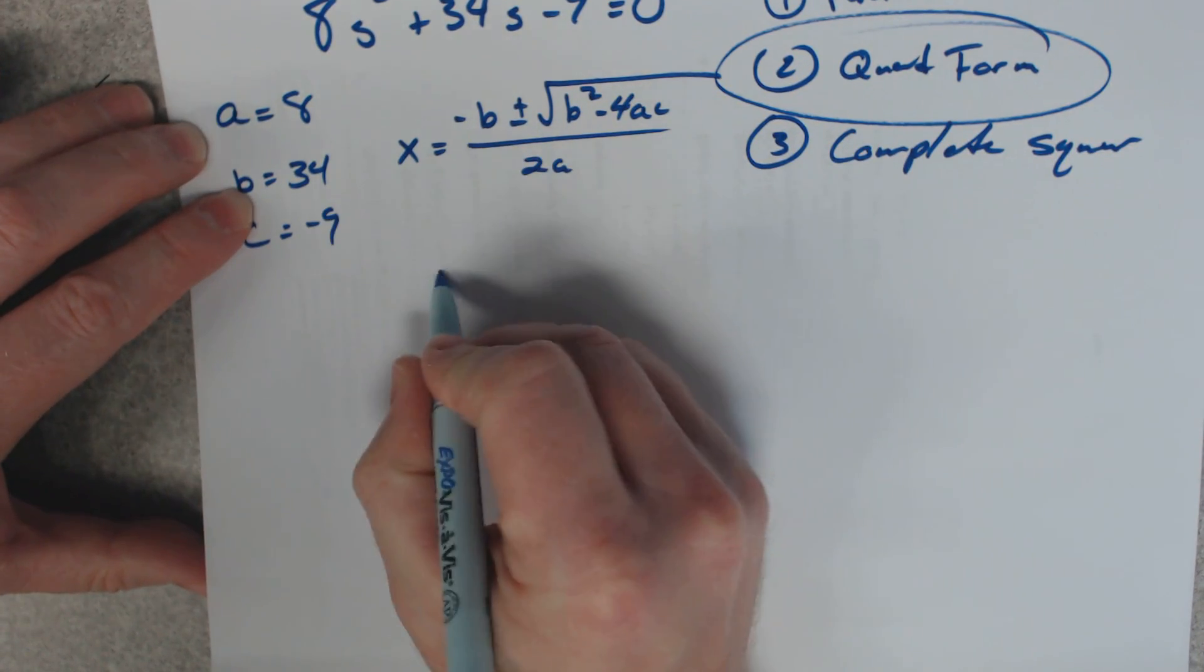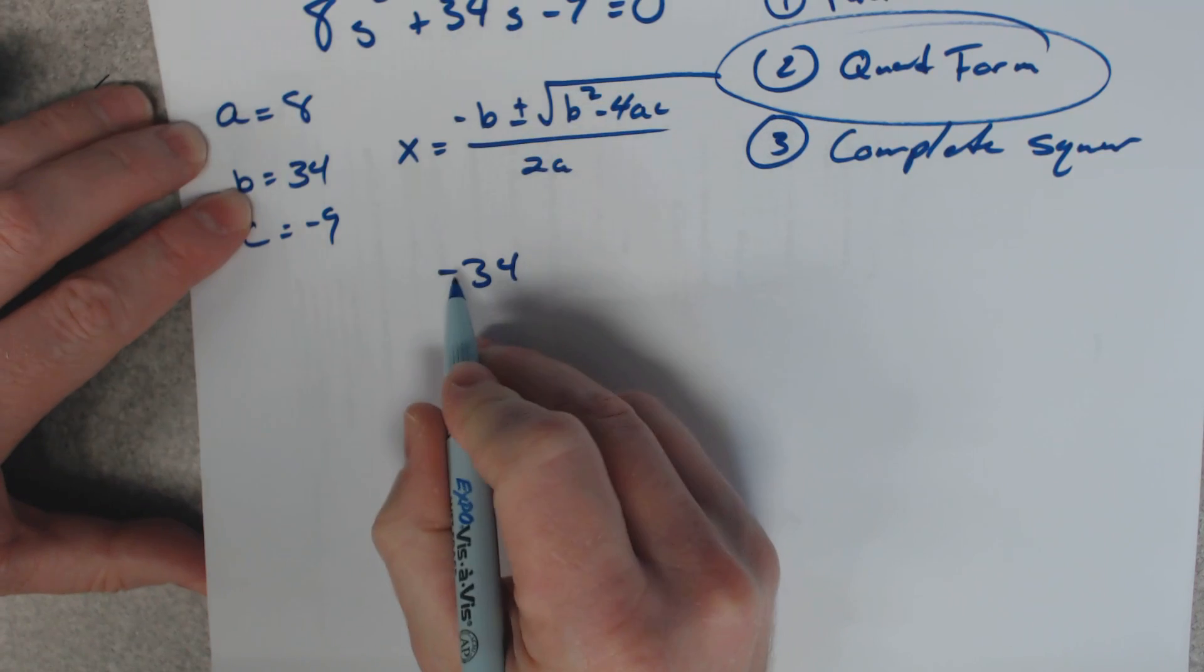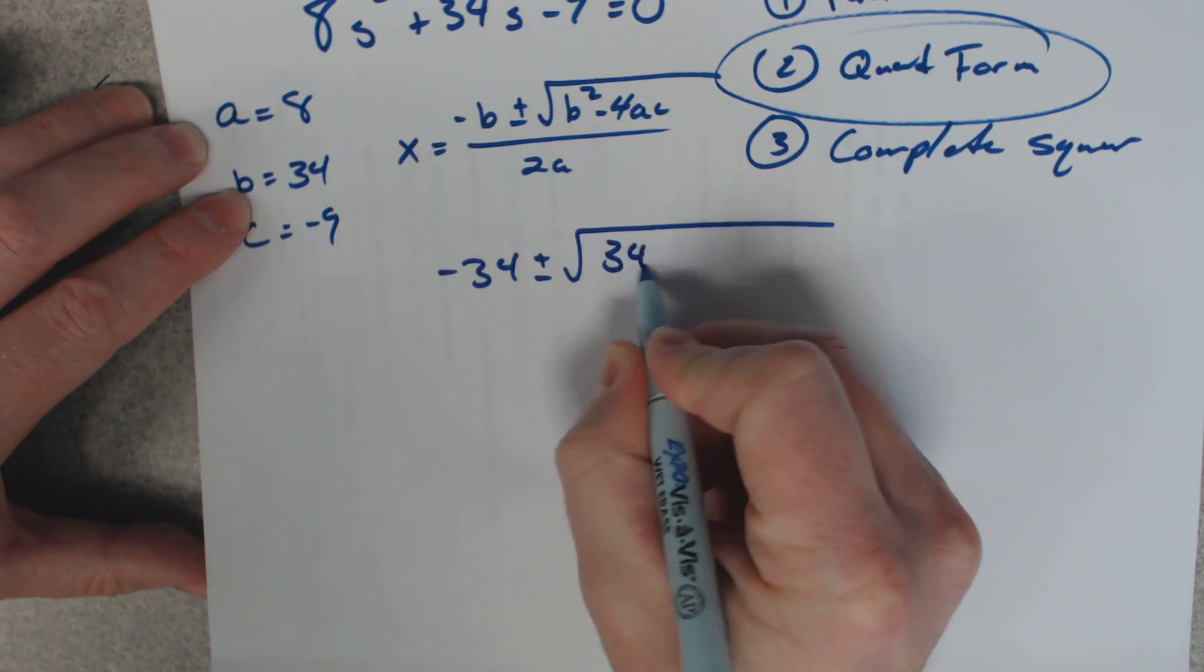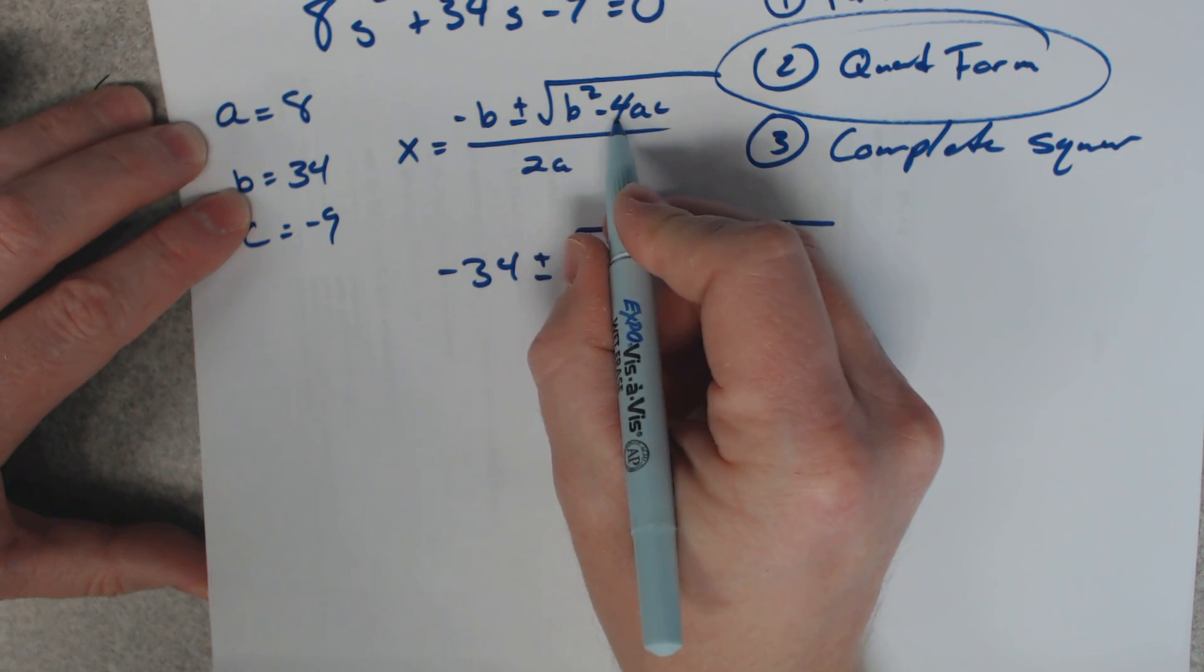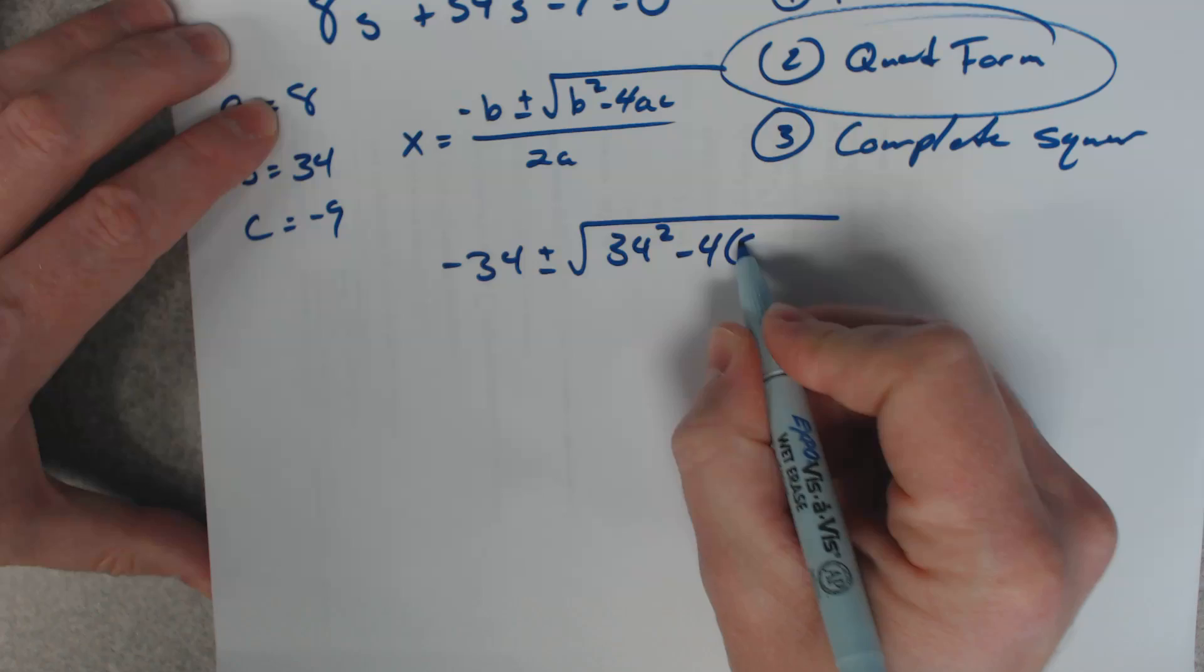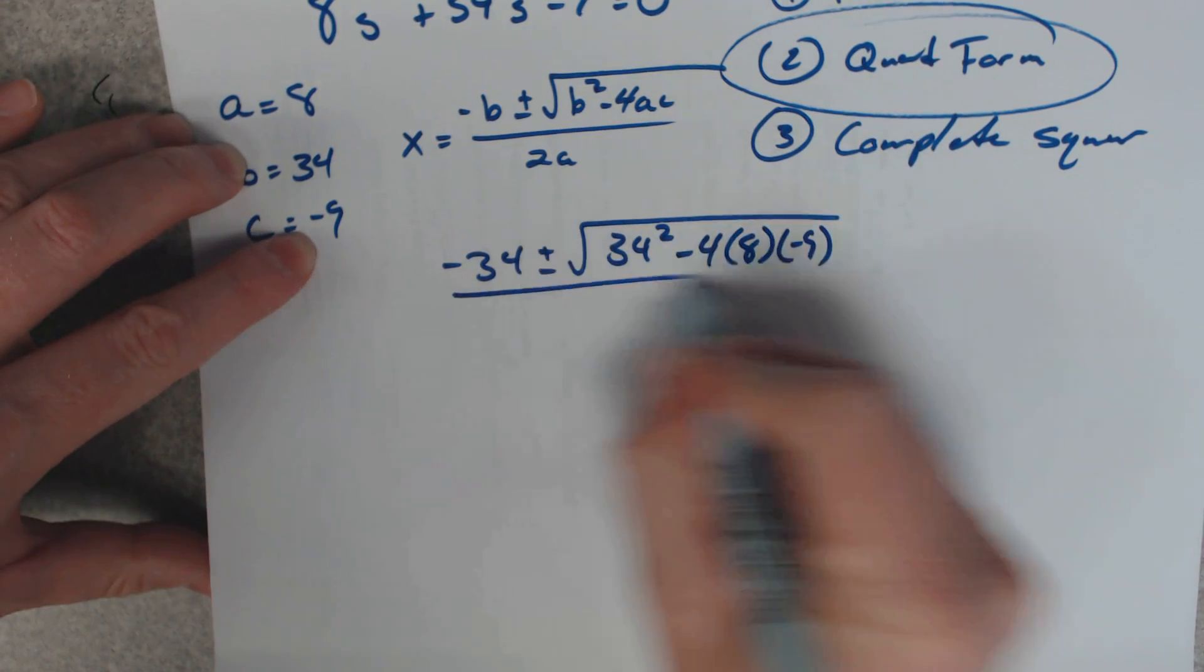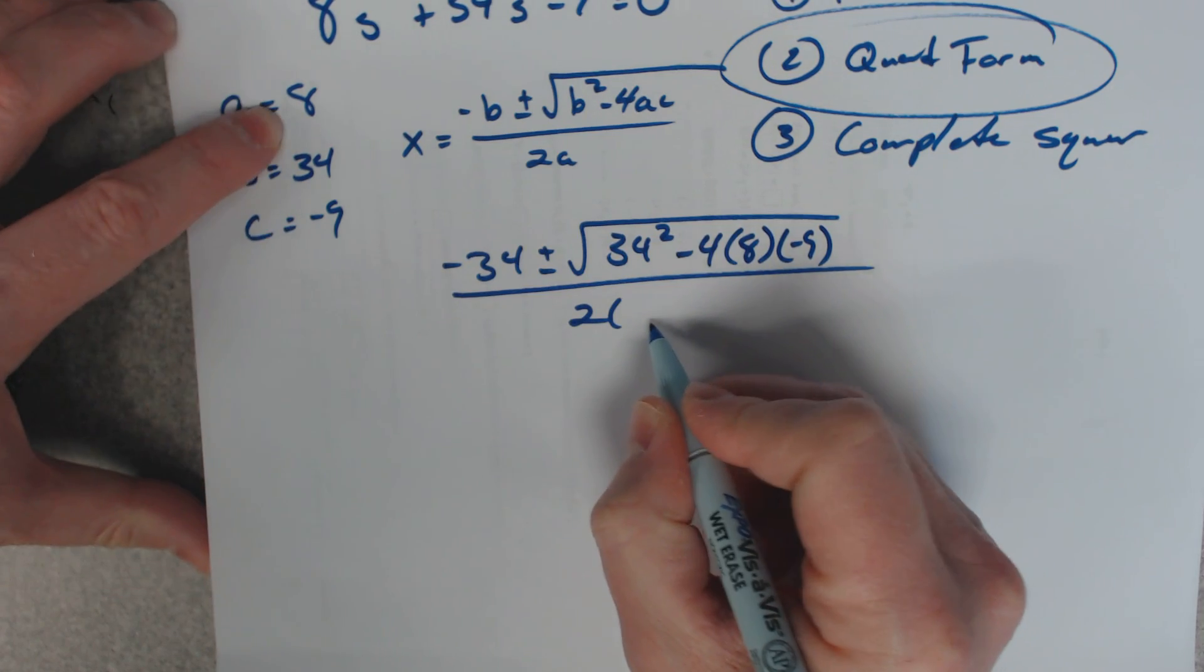So what we want to do is just plug in these values into this formula. So it would be negative 34, because the negative comes from the formula, plus minus square root of 34 squared minus 4 times a, which was 8, times c, which was negative 9, all over 2 times 8.